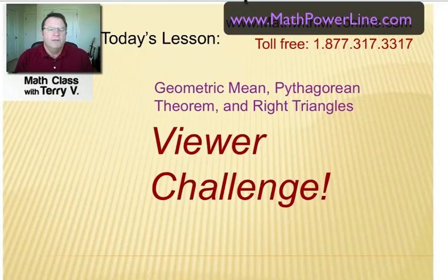This is the first of two viewer challenge videos on this topic: Geometric Mean, Pythagorean Theorem, and Right Triangles. Now the idea is that you have already studied geometric mean, you know how to set up that proportion and how that works, you know how to use the Pythagorean Theorem to find one missing side of a right triangle, and you also know the altitude of right triangles and how that works with the geometric mean. So it's a lot of assumptions, and I hope that once I go through these problems that it makes sense. It's just either a challenge for you or a good review. Let's take a look.